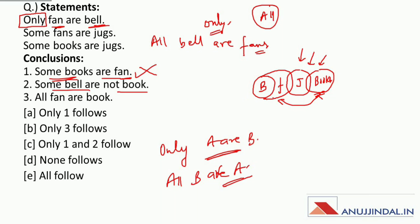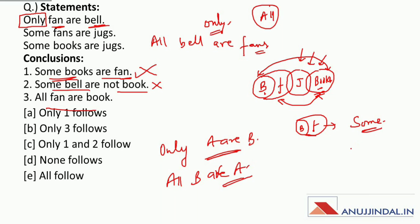Now: some bel are not book. Again there is no direct relation between book and bel, so we can't say about this conclusion — it will be incorrect. Now: all fan are book. Kya sare fan book hai? Nahi. Because the relation between book and fan — joh bahar wala bada wala circle hai, us mein jo 'some' hoota hai woh definite case mein aata hai. Aur joh 'all' hota hai woh possibility mein aata hai. Isme humain given tha that 'all fan are book' — it is a definite statement, so this will again be incorrect.